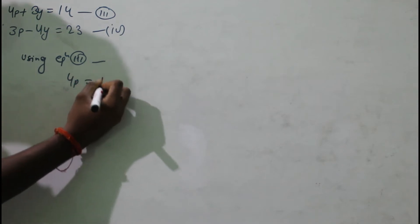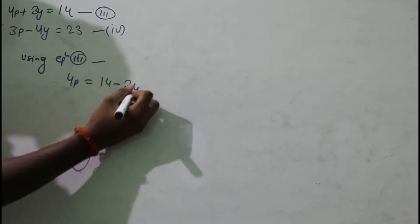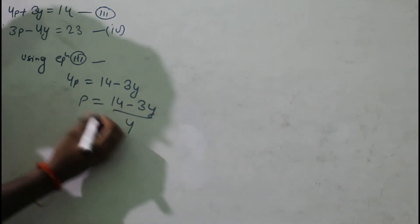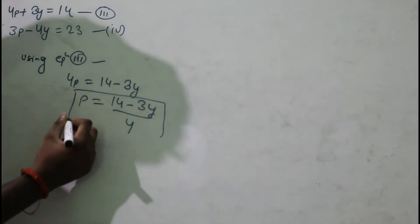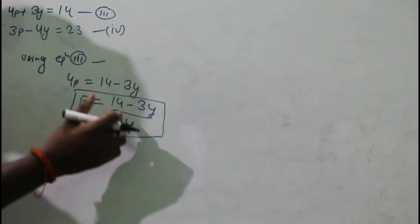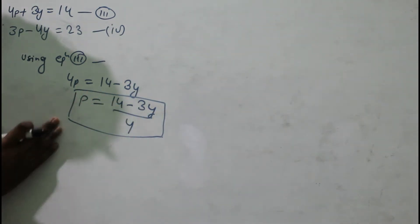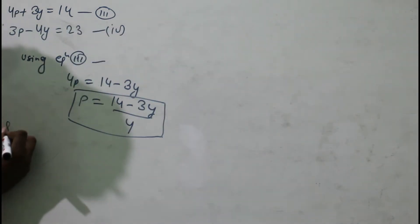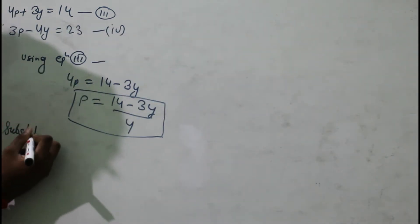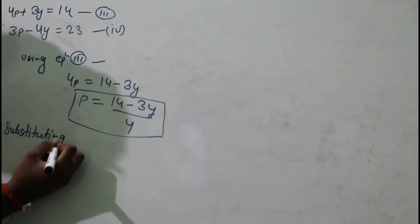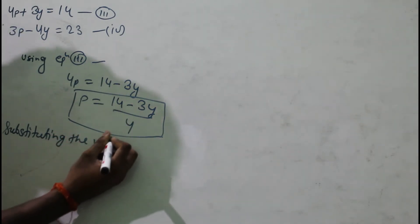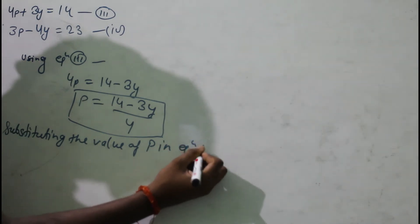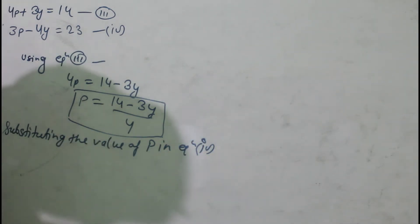From equation three: 4p = 14 - 3y, so p = (14 - 3y) / 4. Now we will substitute this value of p into equation number four.